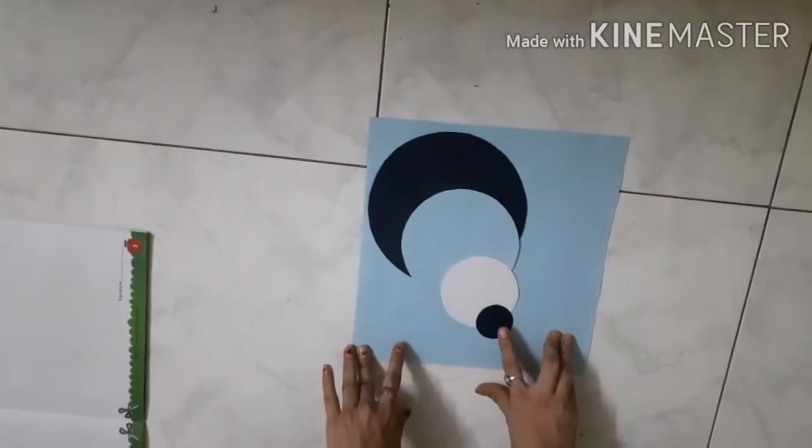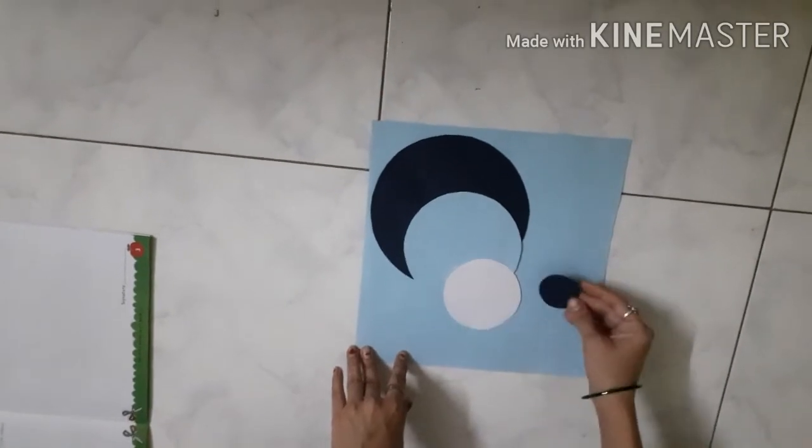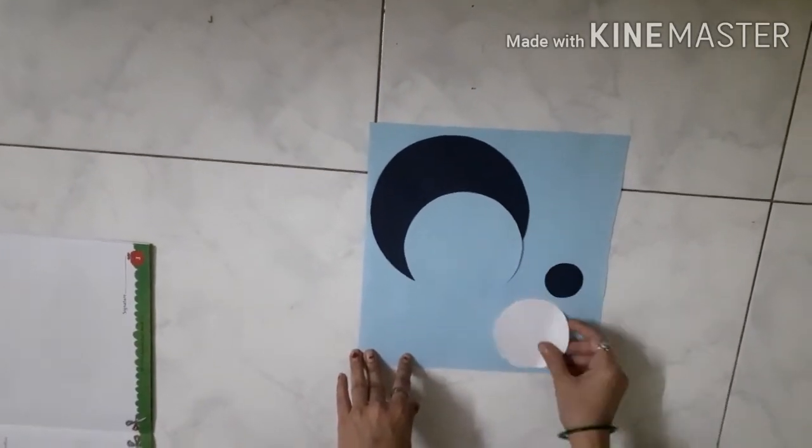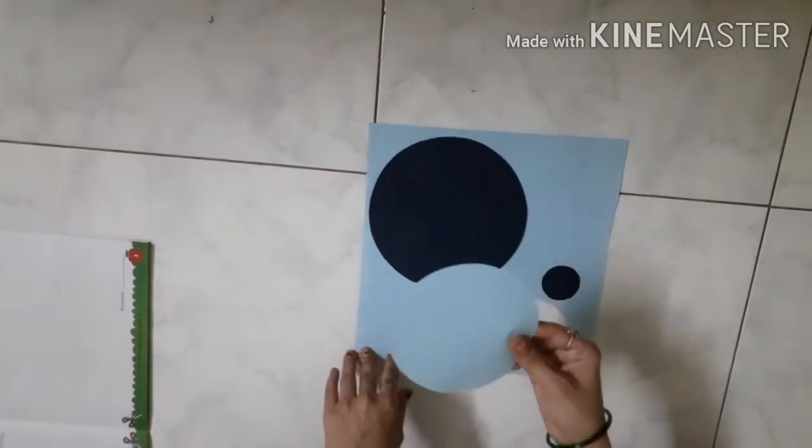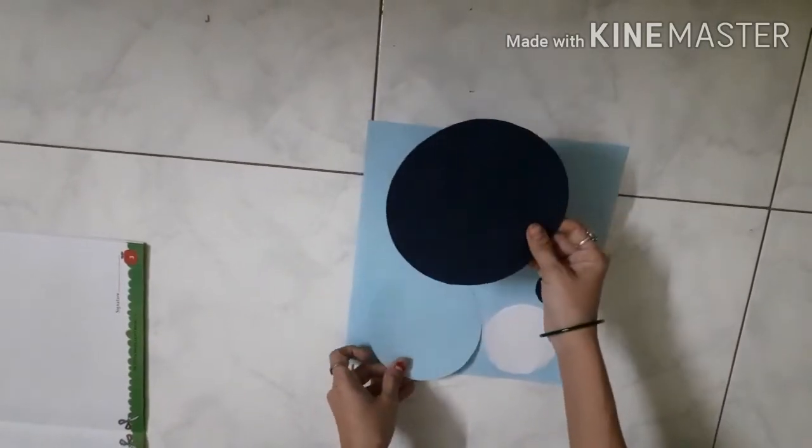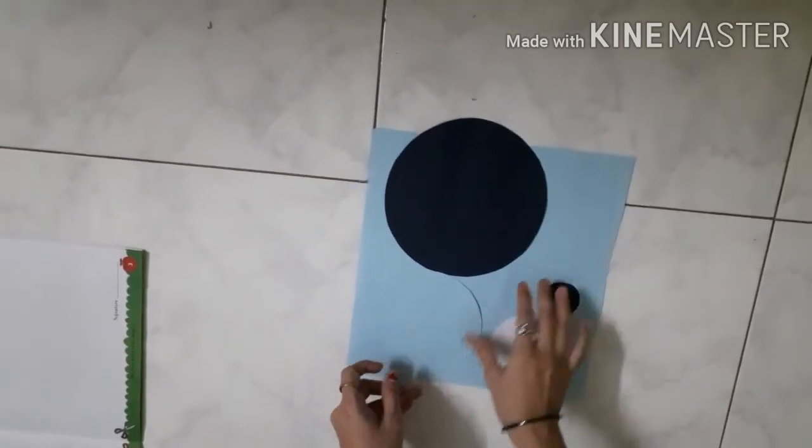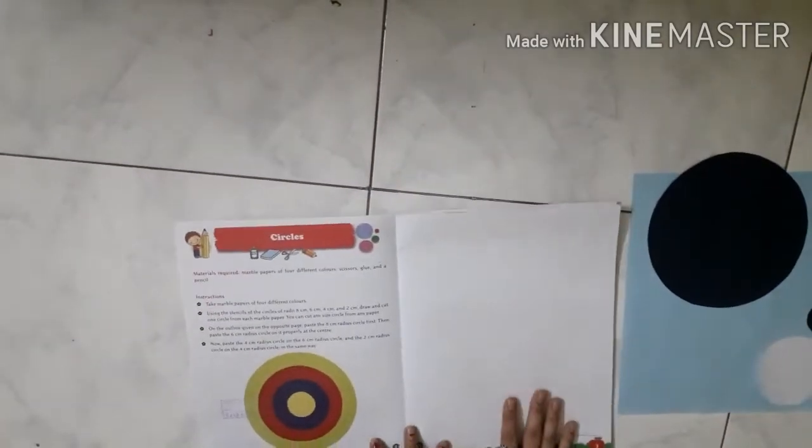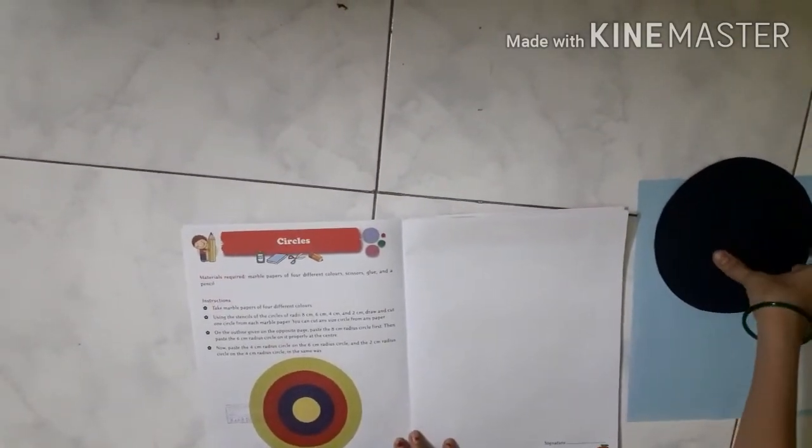Now our four circles are ready. This is two centimeter, this is four centimeter, this is six centimeter, and this is eight centimeter. Now we need to take our craft book and go to page number three.